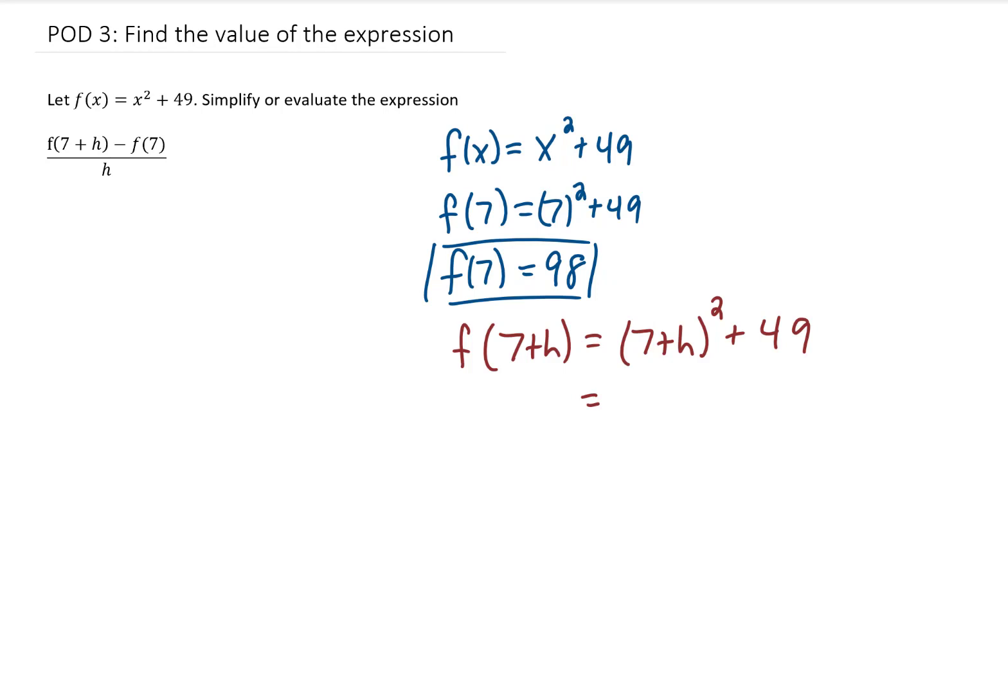In order to square 7 + h, we need to do that whole foiling thing, which maybe is a little bit more clear if I write out this (7 + h)² like this. Multiplying our first two terms, our outer two terms, our inner two terms, and our last two terms. Don't forget the + 49 at the end. Now we can reorder things and combine like terms. We get h² + 14h + 98. And that is f(7 + h).